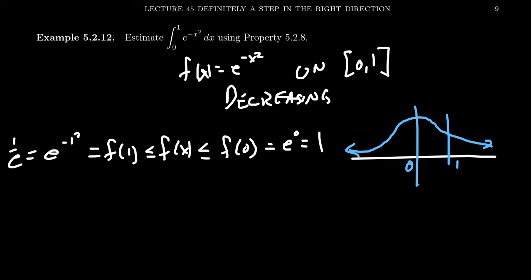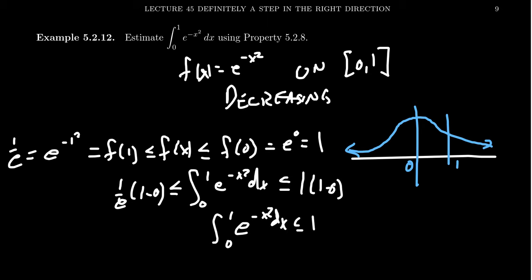So applying this, the property from before, the integral from 0 to 1 of e to the negative x squared dx, this will sit below 1 times 1 minus 0, the length of the interval. But it will sit above 1 over e times 1 minus 0. As the length of the interval is 1 in both situations, we get our integral from 0 to 1 of e to the negative x squared dx. It sits below 1, but it sits above 1 over e,